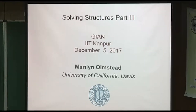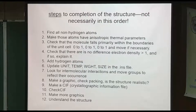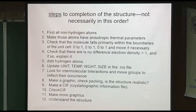Let me run quickly through the steps to solving a structure — we keep doing this. It's not necessarily in this order; you could add hydrogen atoms before step five. But initially you want to find all the non-hydrogen atoms. You usually need an R value of 5% or less to really locate hydrogens in a difference map. Adding the hydrogens gets it down, yes, but not as fast as a larger atom.